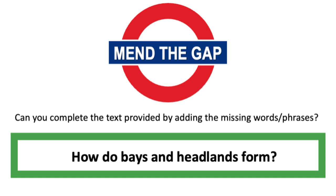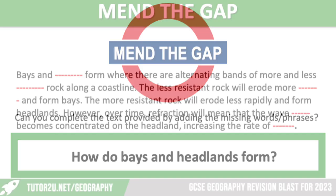Our next activity follows a similar thread. This time we are looking at Mend the Gap. We've got some text that answers the question 'how do bays and headlands form?' but there are some missing words. You need to work out what those missing words are.